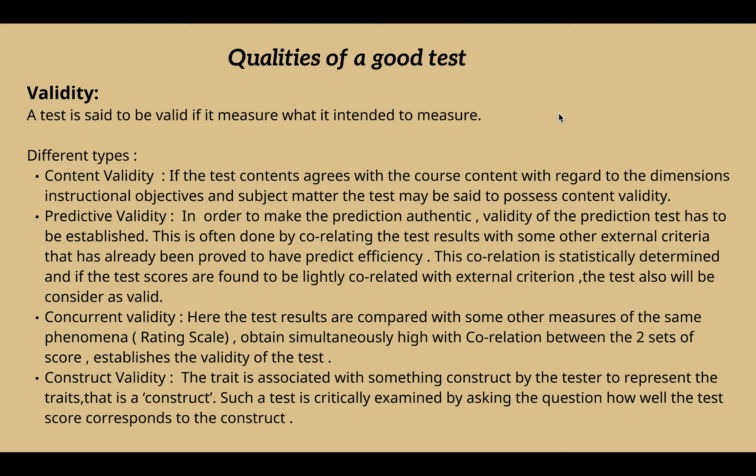Construct validity refers to a trait associated with something constructed by the tester to represent that trait — that is a construct. Such a test is critically examined by asking the question: how well do the test scores correspond to the construct? That is construct validity.